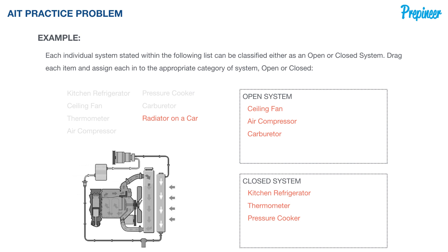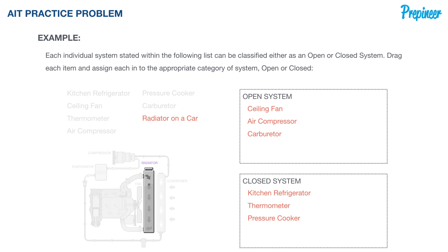Finally, we have the radiator on a car. Here's a typical vehicle cooling system — of which we're only concerned with the radiator. Hot coolant is cycled from the inlet through the radiator tubes, dispersing at the outlet at a cooler temperature. Heat energy is extracted by air flowing over the outer surface of the radiator tubes. With transfer of both matter and energy, the radiator is an open system.